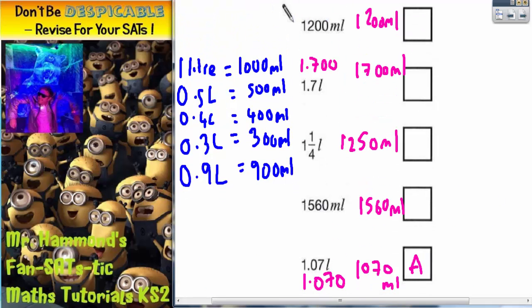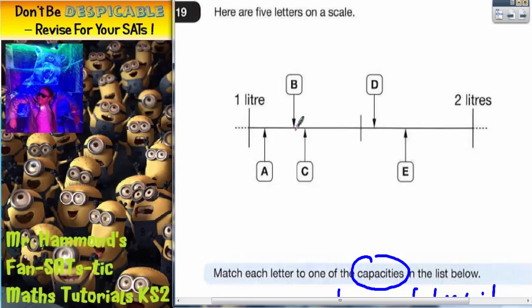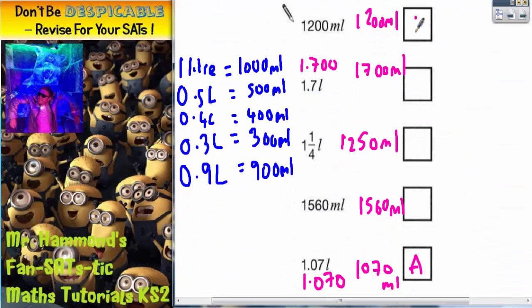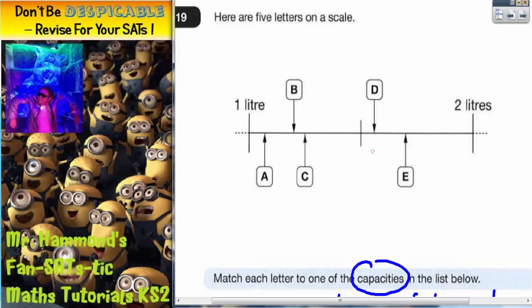The next smallest is 1,200. So 1,200, if I'm moving up from A, has to be the next letter I reach. And the next letter I reach on the scale is B. So 1,200 has to be B. The next smallest is 1,250. So that's going to be the next letter on the scale, which is C.